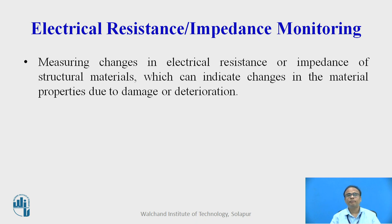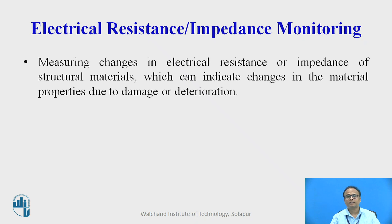Electrical resistance or impedance monitoring involves measuring changes in electrical resistance or impedance of structural materials, which can indicate changes in material properties due to damage or deterioration. Whenever you want to find a crack in a particular structure, you will find there is a change in electrical resistance. This indicates a change in the material properties due to cracks or spalling of concrete.